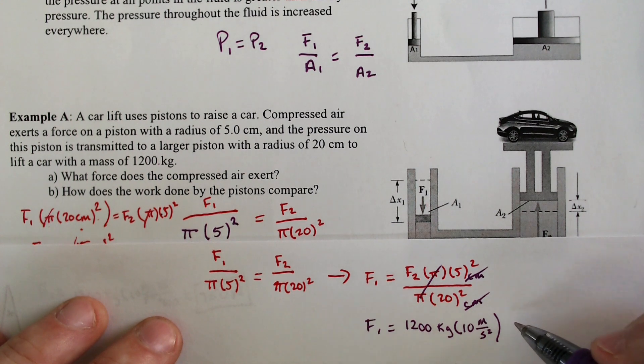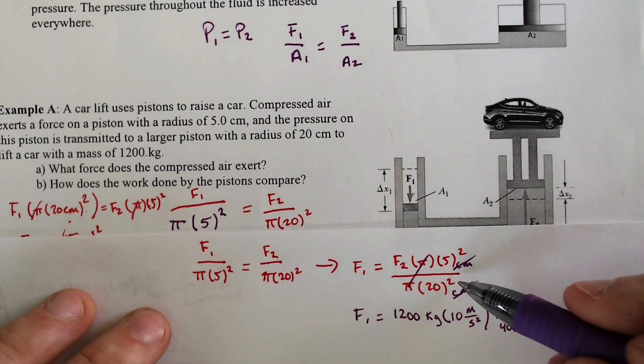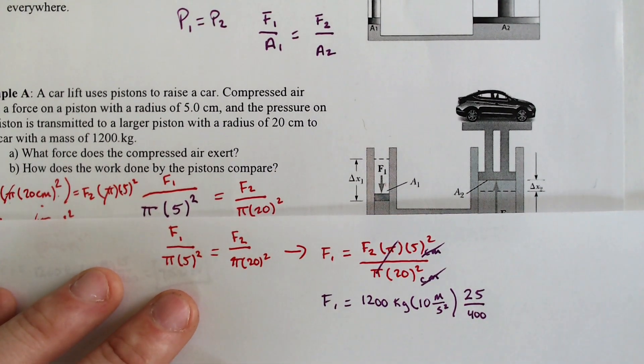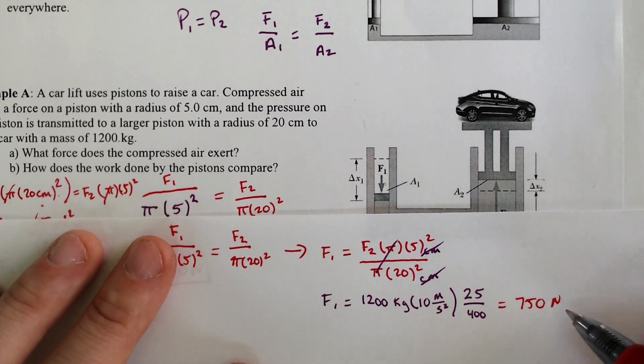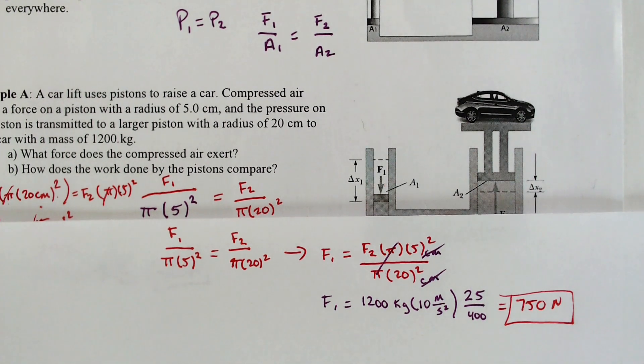The acceleration is gravity. It's having to fight gravity. And for simplification, we're not going to use 9.8. We're going to call it 10 meters per second squared. And then that would be ending up multiplying by 25 over 400 for the 5 squared over 20 squared. And if we do all of this, we end up with a force of 750 newtons.